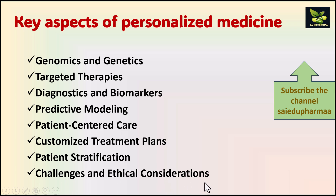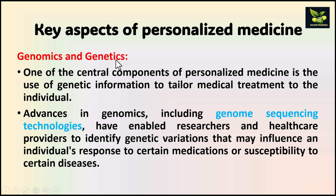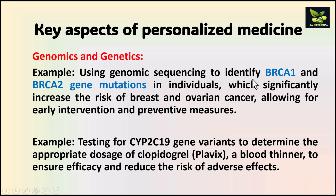Additional key aspects include patient stratification and challenges and ethical considerations. The first aspect is genomics and genetics — the central component of personalized medicine. Genetic information is used to tailor medical treatment to the individual through genome sequencing technologies that identify genetic variations. For example, genomic sequencing is used to identify BRCA1 and BRCA2 gene mutations, which increase the risk of breast and ovarian cancer, enabling early intervention and preventive measures.